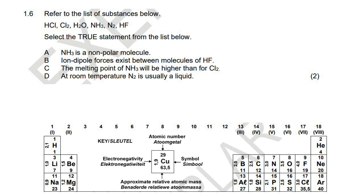So let's start with HCl. To do a Lewis diagram, just look at the H and look at the Cl, and let's see how many valence electrons. To find valence electrons, you just look at the group number. So hydrogen is in group one, so it's got one valence electron. Chlorine is in group seven.